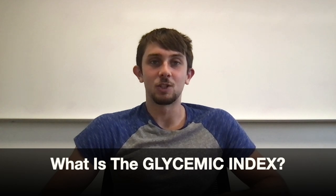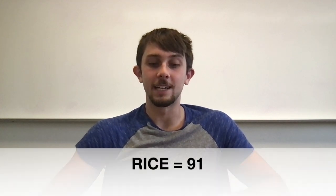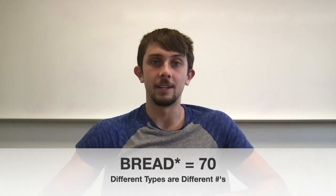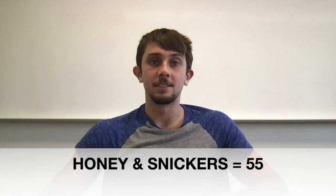The glycemic index is a chart used to compare different foods relative to how glucose-filled they are — specifically, how they elevate your blood glucose levels one to two hours after eating. There are three categories: low, medium, and high. The high glycemic foods are: glucose at 100, rice at 91, Gatorade at 89, oatmeal at 79, French fries at 75, and white bread at 70. The medium foods are: popcorn at 65, raisins at 64, sweet potato at 60, and honey and a Snickers bar are both at 55 — on the cusp of being low.